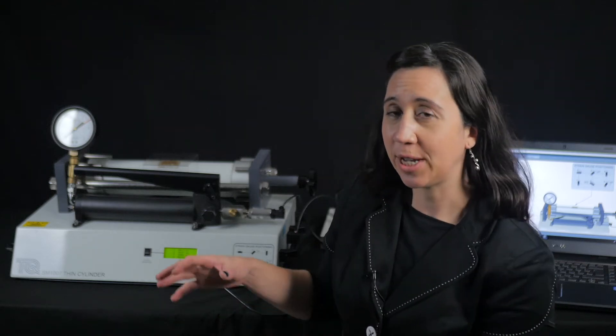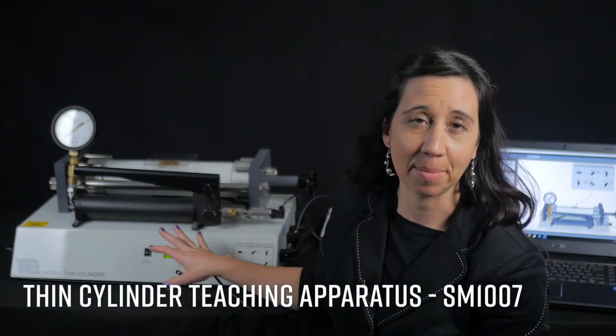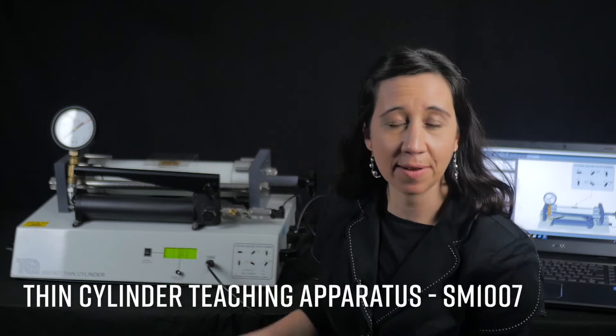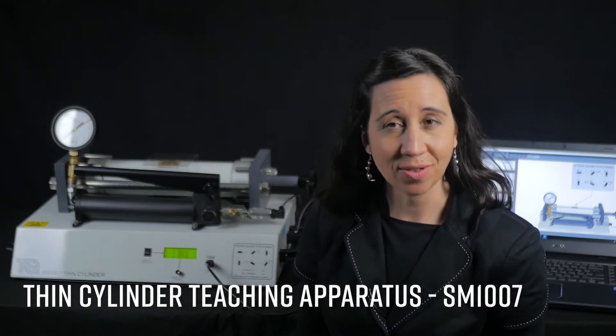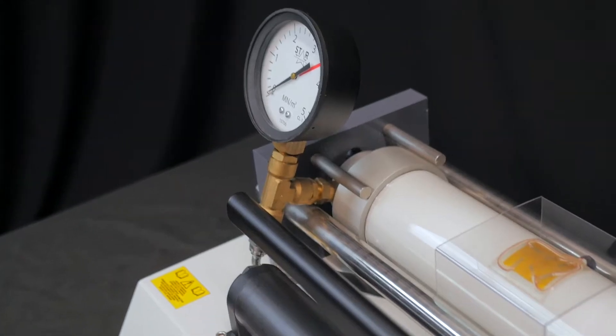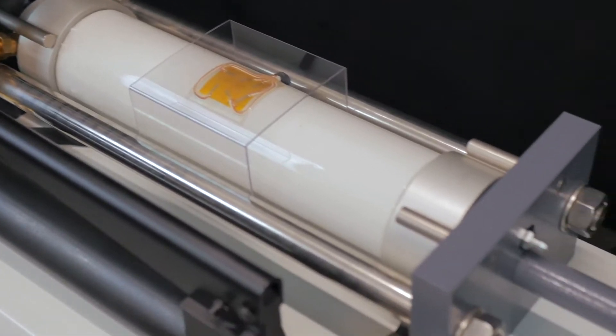In this video, we will be showing you the Thin Cylinder Teaching Apparatus, the SM-1007. We're examining stress and strains on a pressurized thin-walled cylinder. This is part of the Materials Testing and Properties range with teaching equipment from Tech Equipment.